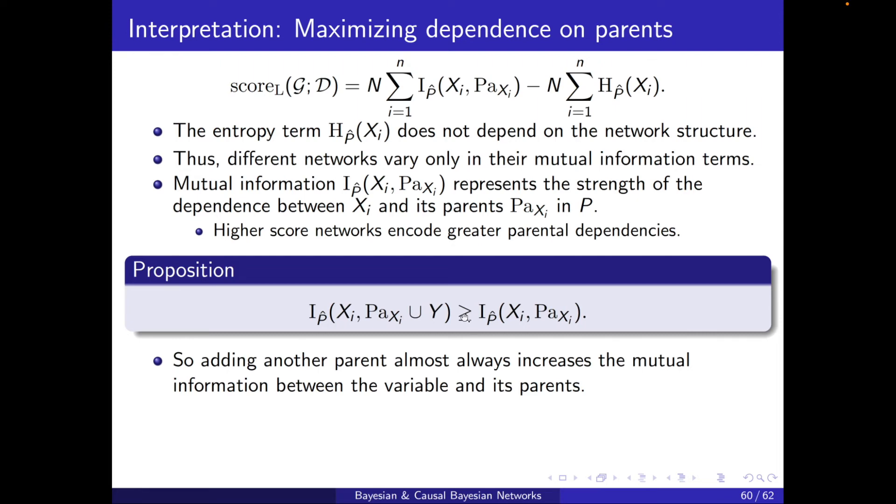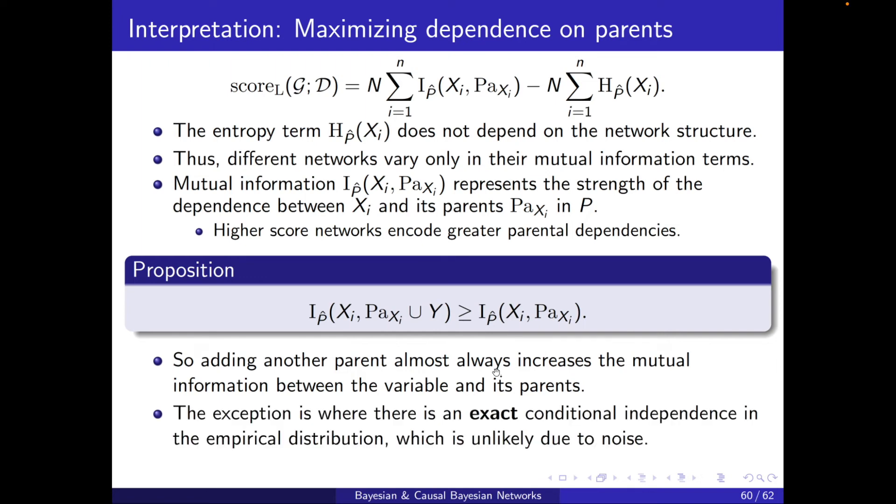Okay. So adding another parent almost always increases the mutual information between the variables and its parents. It will never decrease. What we mean here is that it will strictly, almost always strictly, increase. The exception is where there is an exact conditional independence in the empirical distribution. Then we will say that, well, now we added Y, but it just kept it as equal.